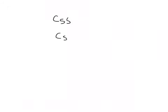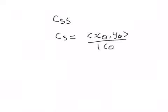We already know that c_s is given by x_θ, y_θ upon the magnitude of c_θ. Now to find the second derivative of c — the derivative of c_s — we'll compute d/ds of c_s, which will be the partial with respect to θ of c_s, and then we have dθ/ds.